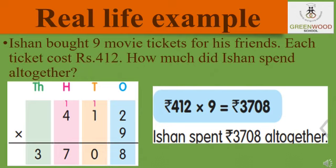412 into 9. First, 9 we will multiply with 2. 9 twos are 18, so 8 in the place of 1's while 1 will go on the head of 10's. Now 9 ones are 9, and 9 plus 1 is 10. So 0 in the place of 10's while 1 will go on the place of 100's. Now 9 fours are 36, and 36 plus 1 is 37. After 4 there is no number, so 37 we write it down. Our answer is 3708. So Ishan spent 3708 rupees altogether.